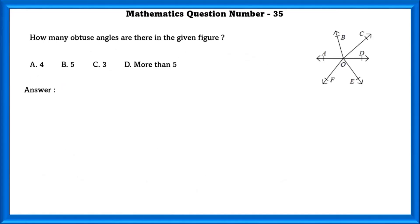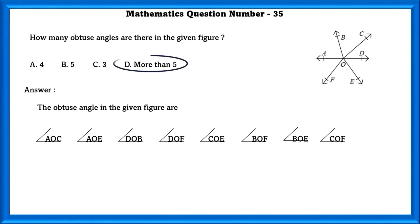Mathematics question number 35. How many obtuse angles are there in the given figure? The obtuse angles in the given figure are listed below, which is more than 5.